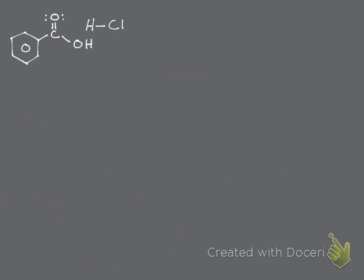The first step: the lone pairs on the carbonyl oxygen are going to come and attack the hydrogen atom of HCl. That's going to cause the electrons bonding the hydrogen to the chloride to kick onto the chloride, causing the formation of a Cl⁻ ion. This results in the protonated carbonyl — we now have an OH here, giving oxygen three bonds and thus a positive charge.